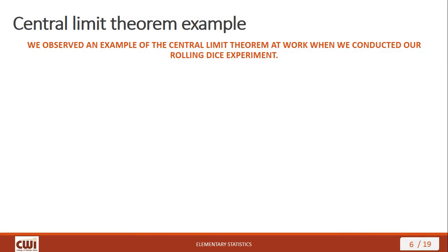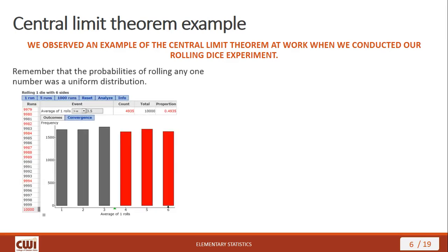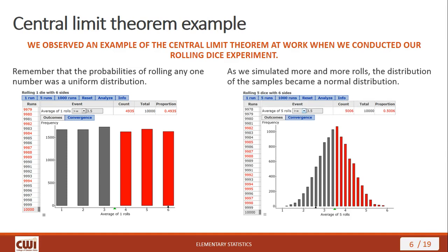We already observed an example of this when we did our work with the rolling dice experiment from the previous lecture. The probabilities of rolling any one number formed a uniform distribution, because the probability of getting any individual outcome was the same. But as we simulated more and more rolls, the distribution of the samples became a normal distribution. The more trials we make, the bigger our sample size, and the bigger our sample size, the more our distribution approximates a normal distribution.